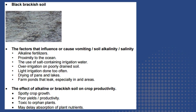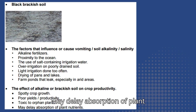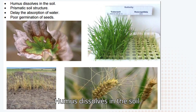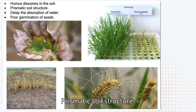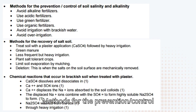The effect of alkaline or brackish soil on crop productivity: spotty crop growth, poor yield and productivity, toxicity to certain plants, may delay absorption of plant nutrients, humus dissolves in the soil, prismatic soil structure delays the absorption of water, and poor germination of seeds.